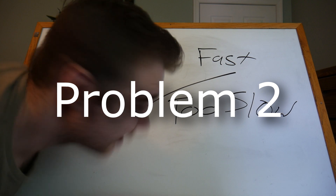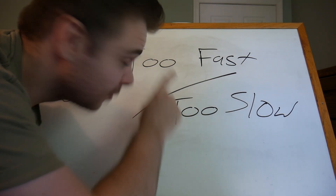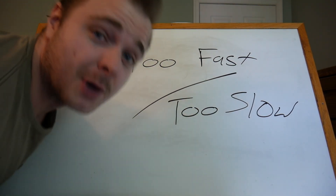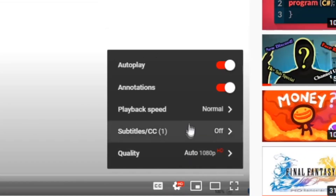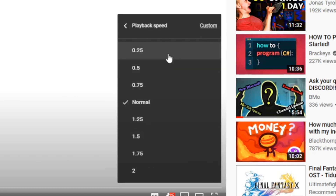Another big thing I heard a lot: tutorials are too fast or too slow, it's too hard to process the information. YouTube actually has a gear icon — settings — where you can go to playback speed and change the speed of the video to be faster or slower. So if a tutorial is going too fast, just slow it down.